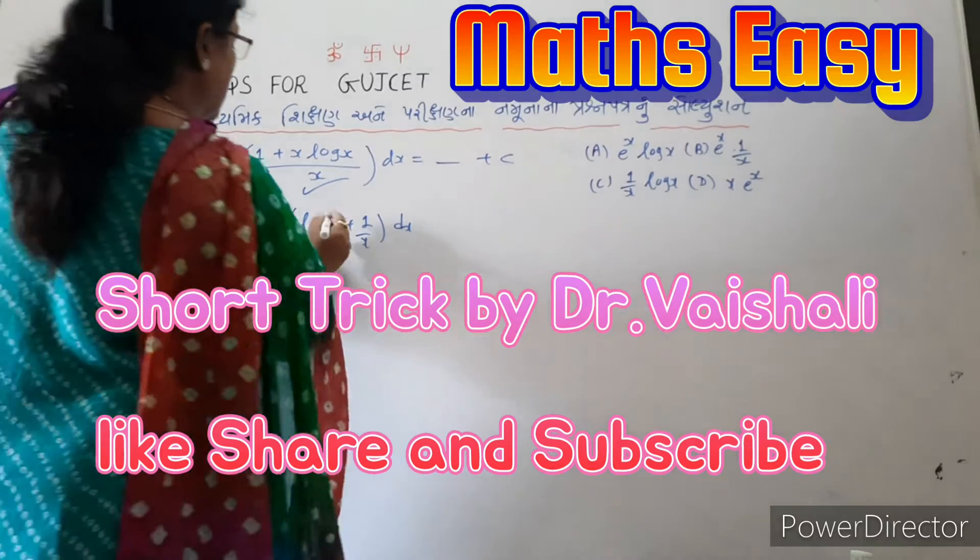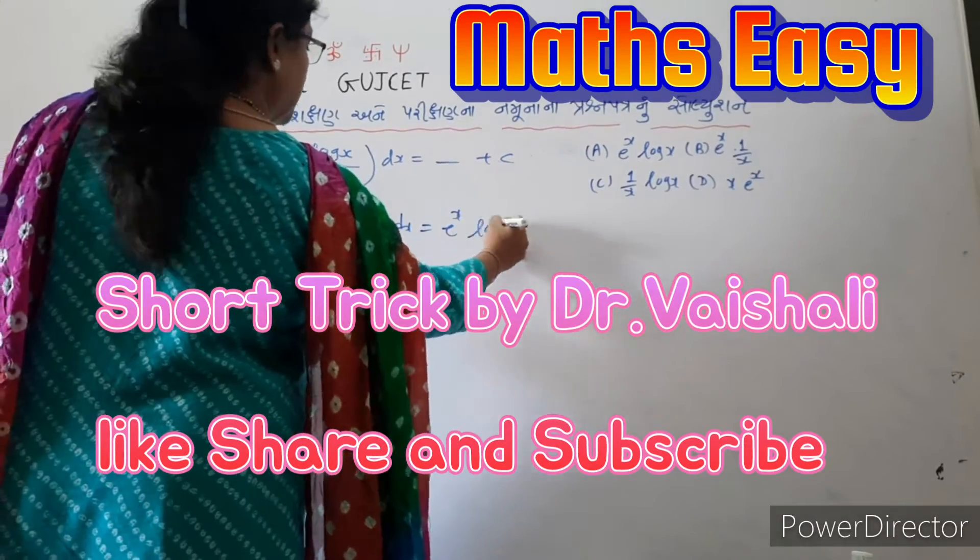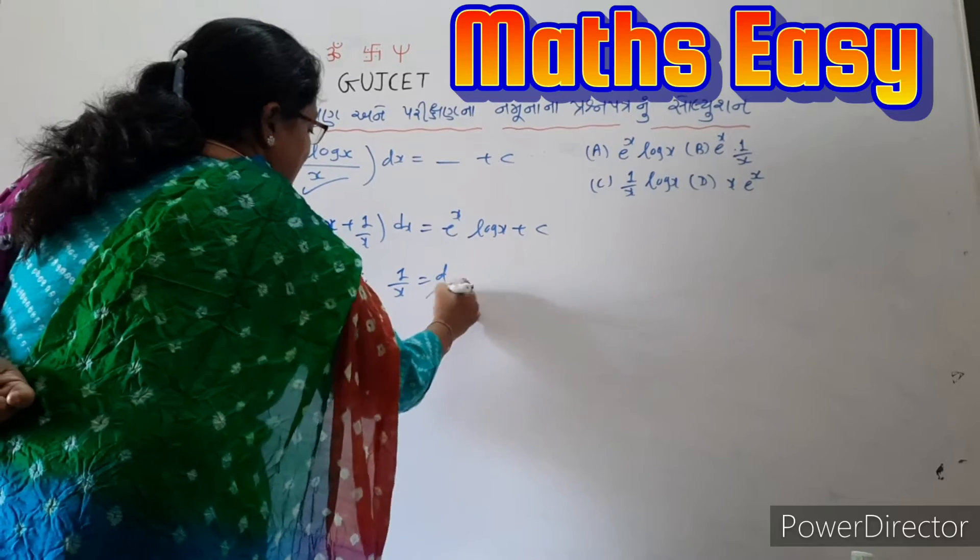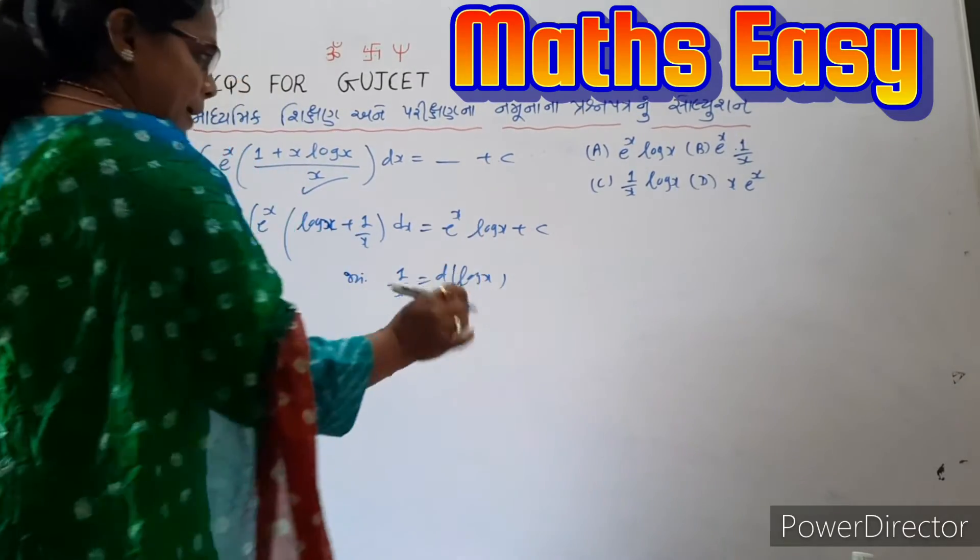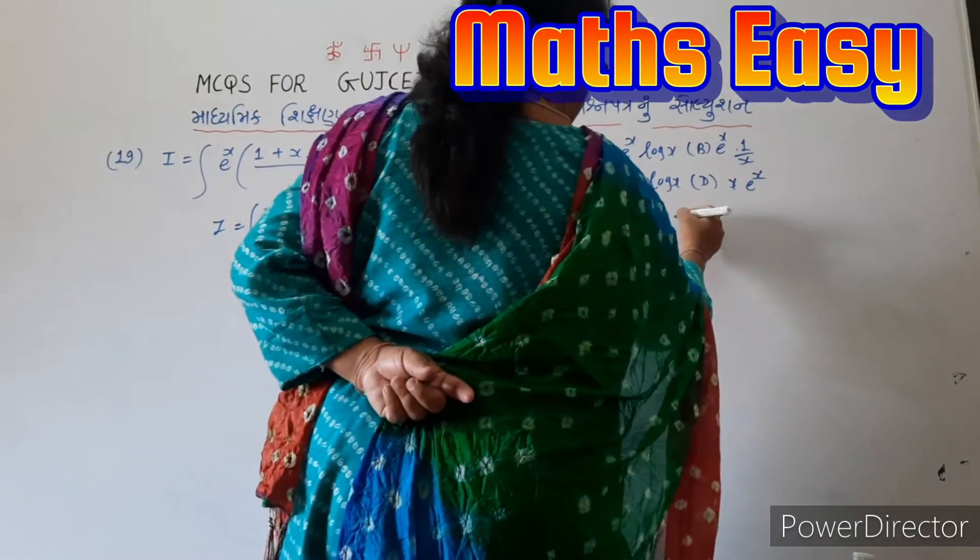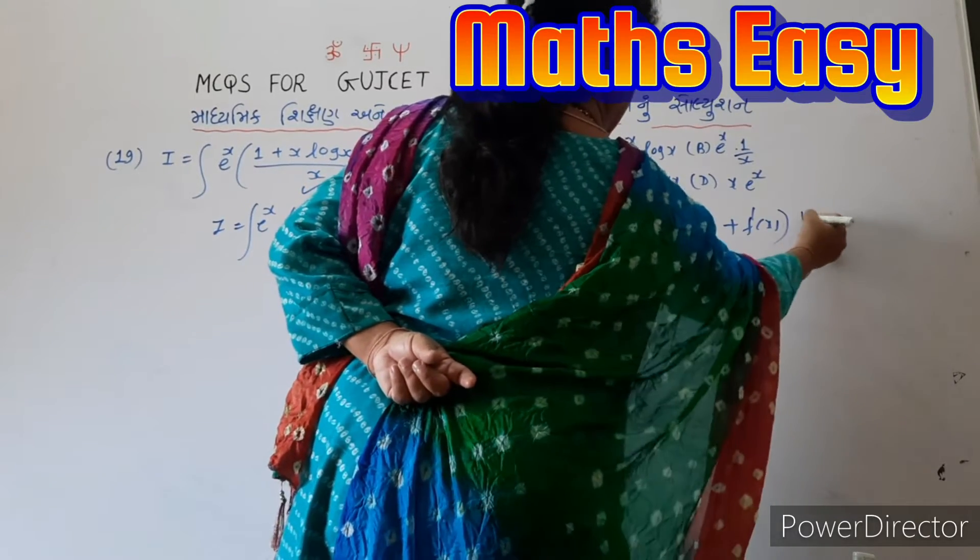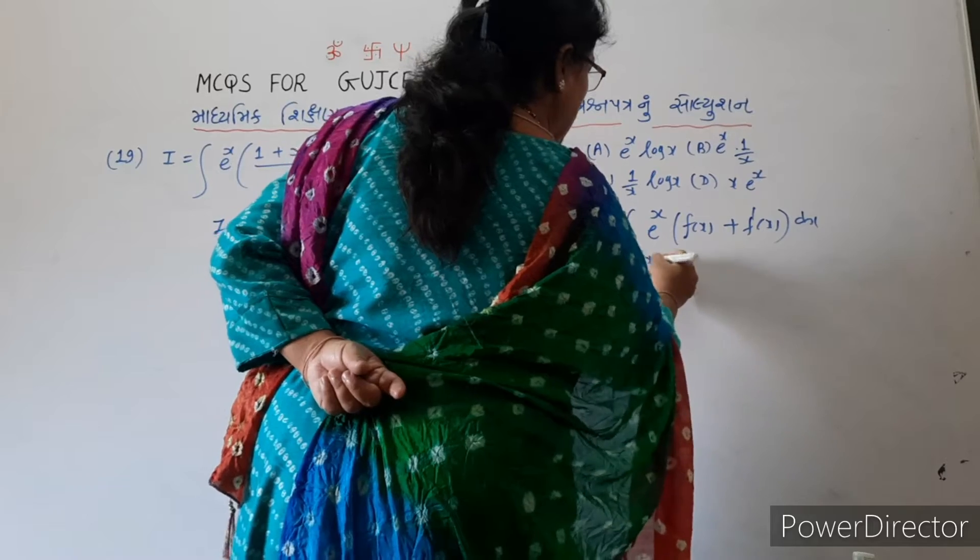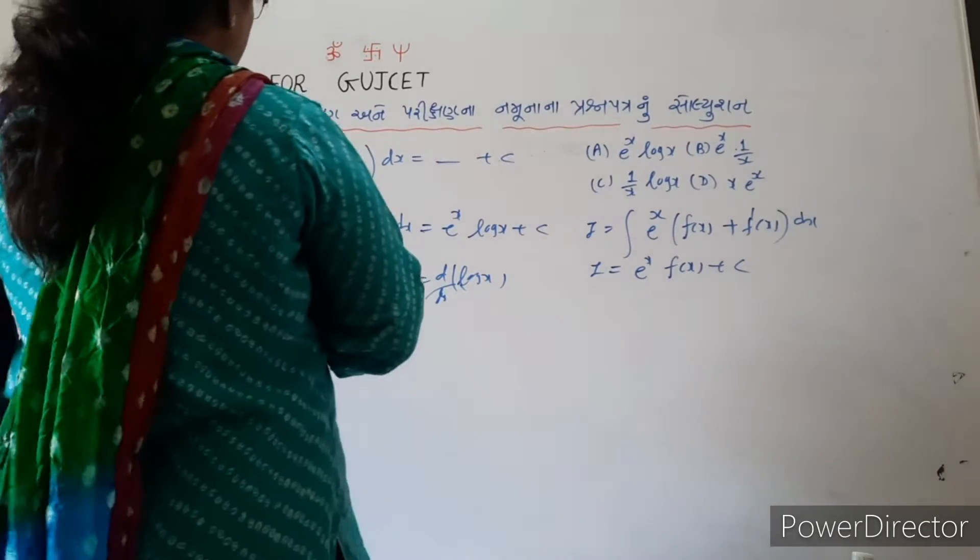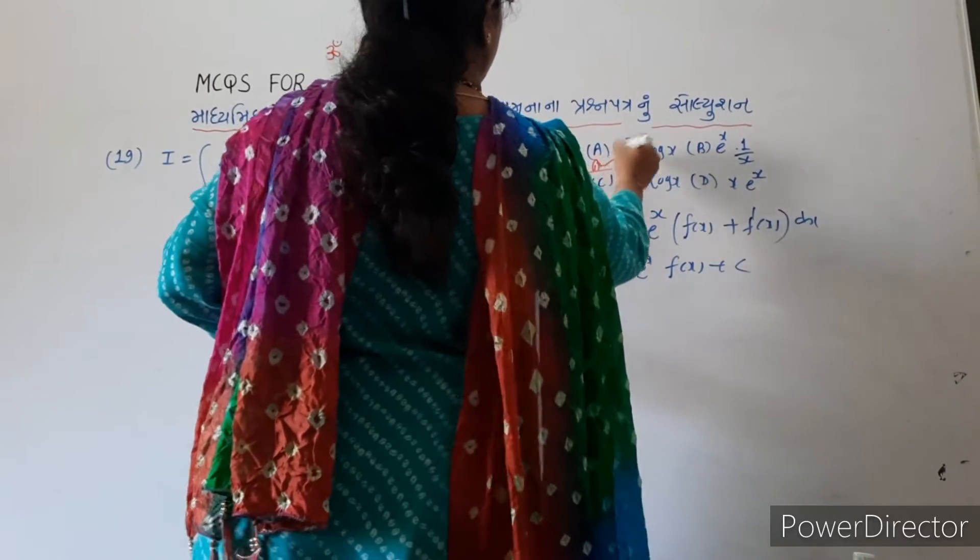So log x is equal to e raised to x log x plus c. 1 upon x is equal to d by dx of log x. So I is equal to e raised to x bracket f of x plus f dash x bracket dx. So I is equal to e raised to x f of x plus c. The answer is e raised to x log x. Option A.